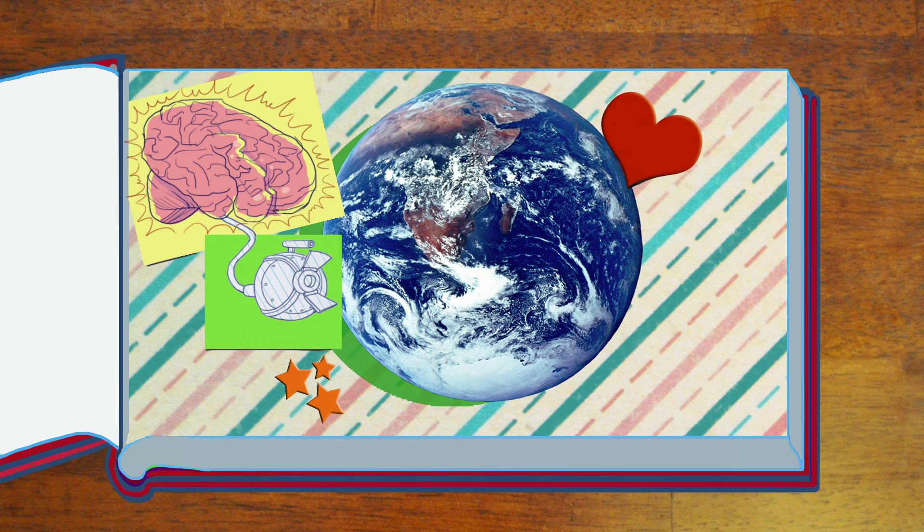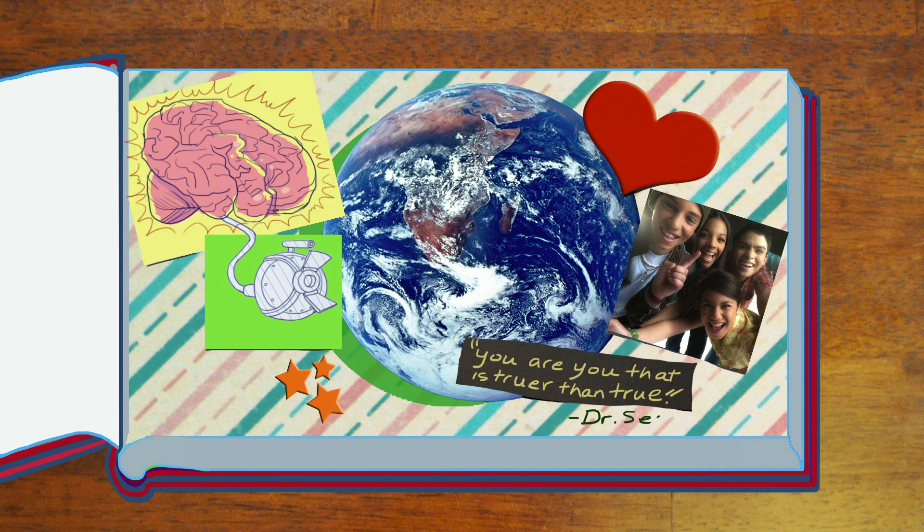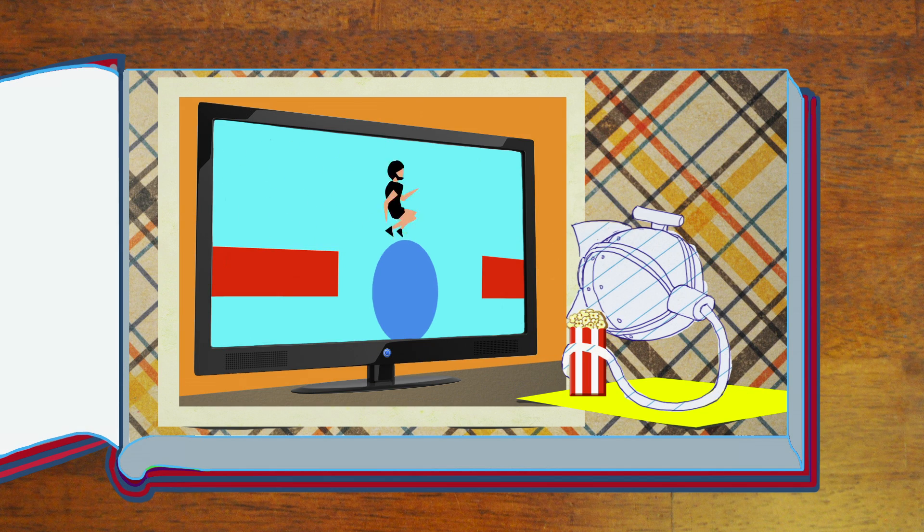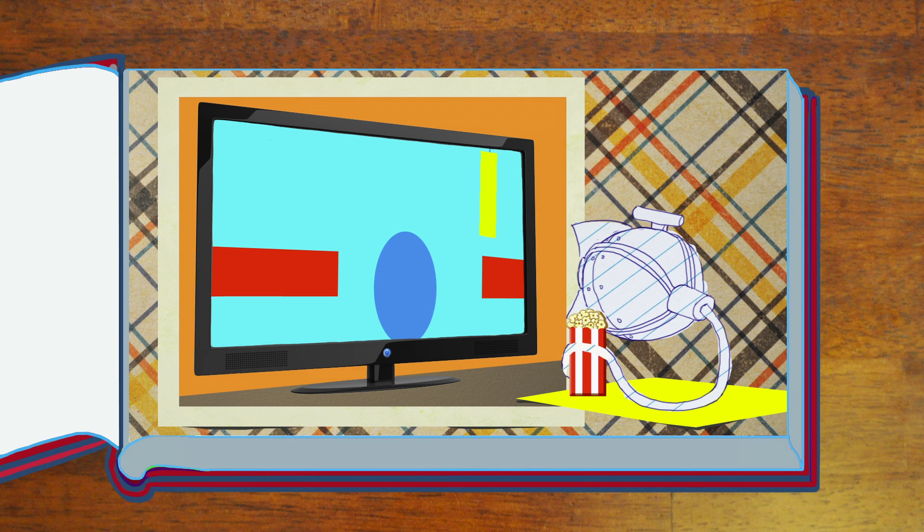Our eyes are how we find partners, how we understand the people around us, how we read, and how we watch game shows on TV where people get knocked into cold water by padded wrecking balls. Yep, the human eye is pretty neat, and we're lucky enough to have two of them.